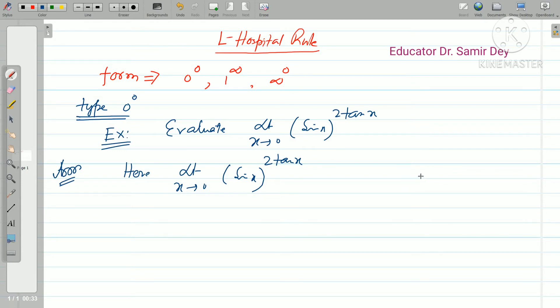Basically if you can see, you have a 0 to the power 0 type form. Then you should consider: let u equals limit x tends to 0, sin x to the power tan x.